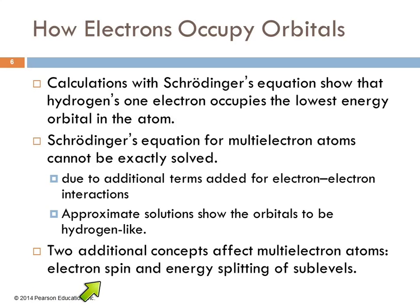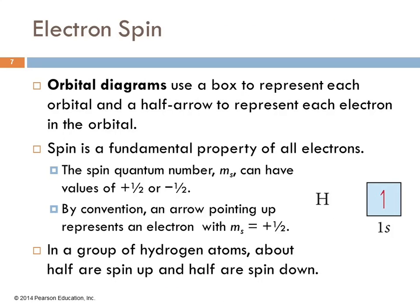Remember we talked about the spin quantum number, M sub S. It can be either plus 1 half or minus 1 half. All electrons have spin. They're going to be either plus or minus. And so when we write an orbital diagram, we just have decided that an arrow pointing up is going to be the electron with a positive spin, and down is going to be negative spin.